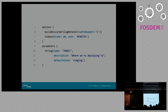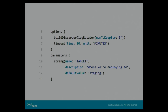The options section contains settings that apply across your entire pipeline. For example, you can set the build discarder job property to keep only the last five builds, or set a timeout step that wraps the entire build — if the build takes more than 30 minutes it gets killed and reported as timed out. Things that apply to the entire build rather than just a part of it go in options.